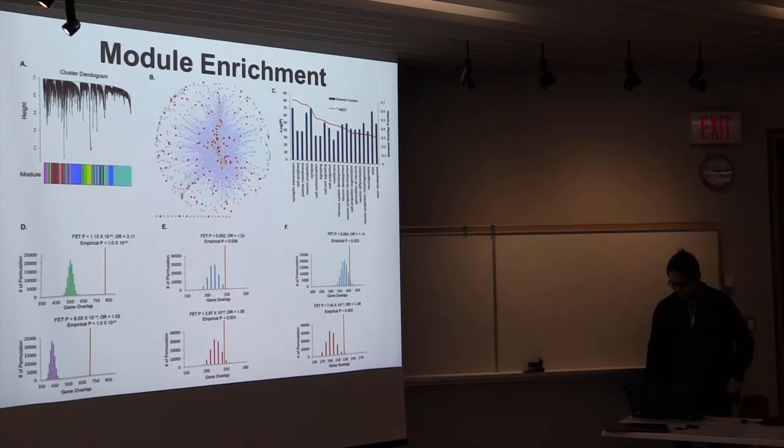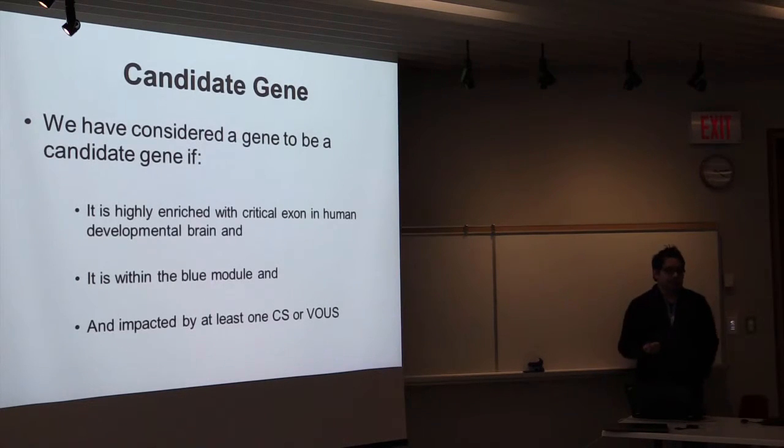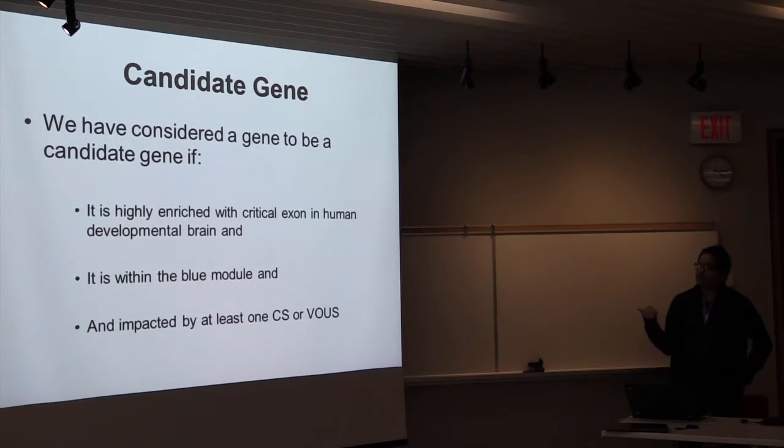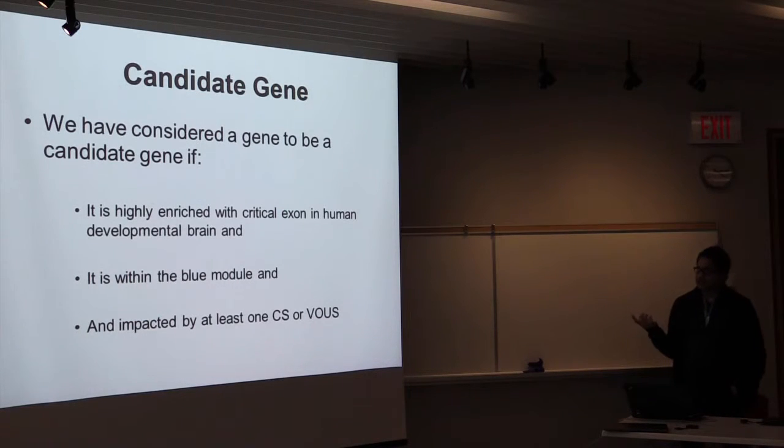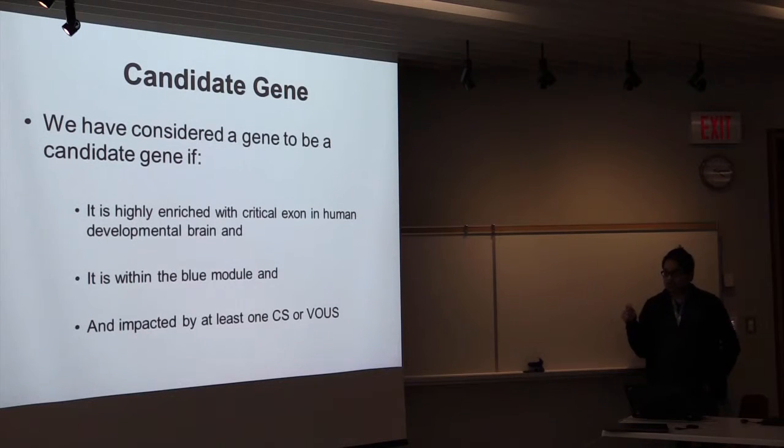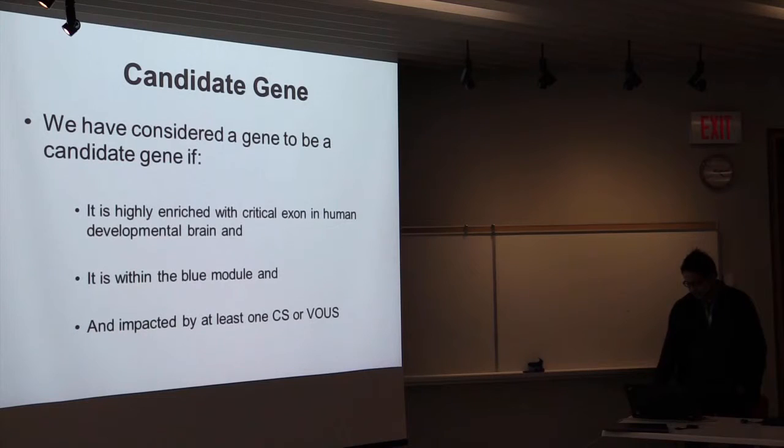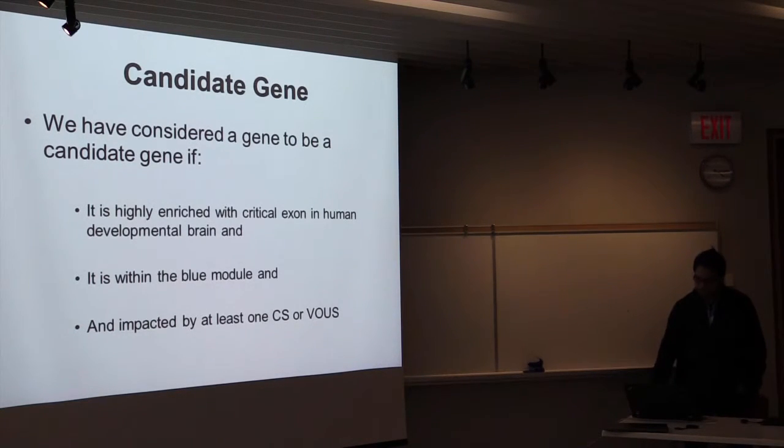So then what we did, we combined the critical exon and the proteomic map analysis to come up with candidate genes. This is the criteria, the primary criteria that we used. The genes have to be highly enriched with critical exon in human developmental brain, and it must be part of the blue module that I showed in the earlier slide. And the genes also have to be impacted by one CS or VUS variant. So then these genes are our candidate genes to follow up with more genetic data.